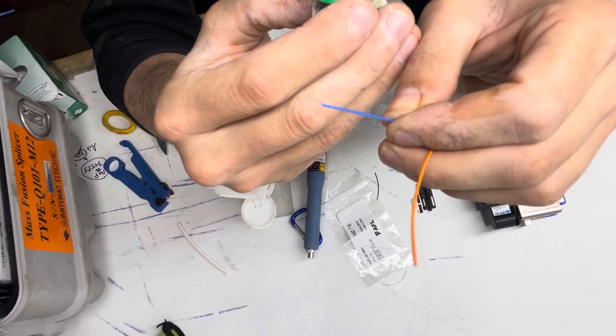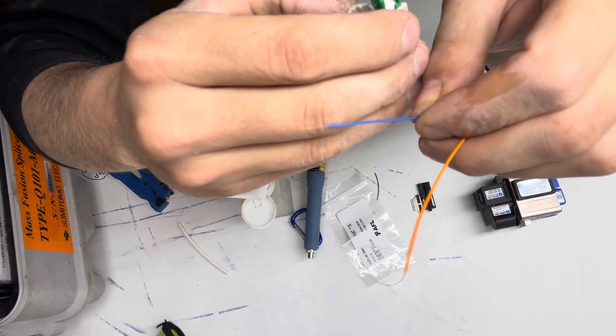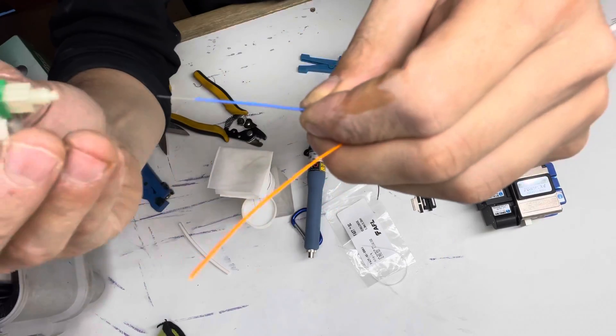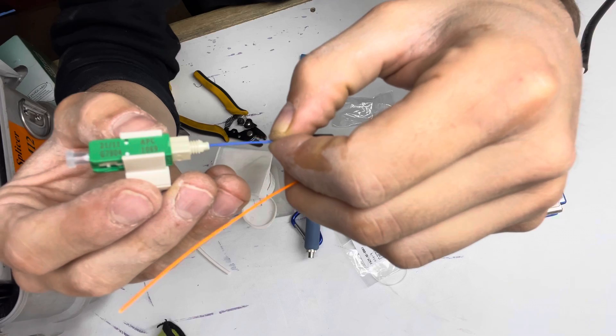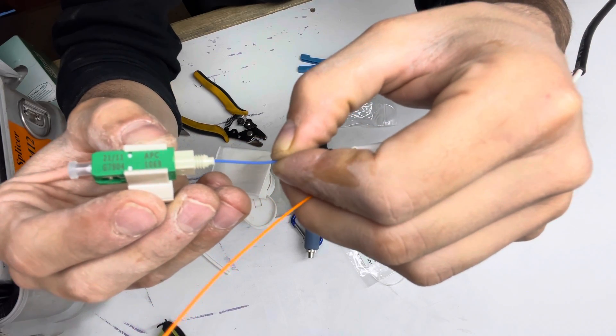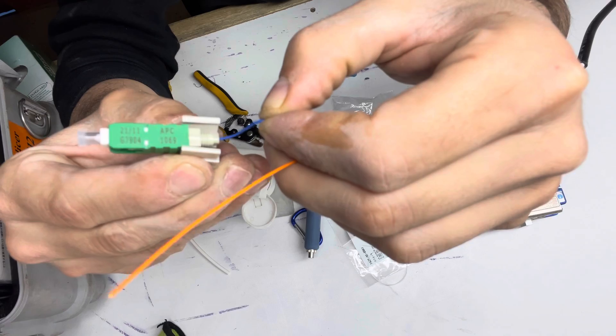Now you can take your cleaved fiber. Get a view on that. Slide it into the back of the quick connect until you feel it hit the end. Push and release.